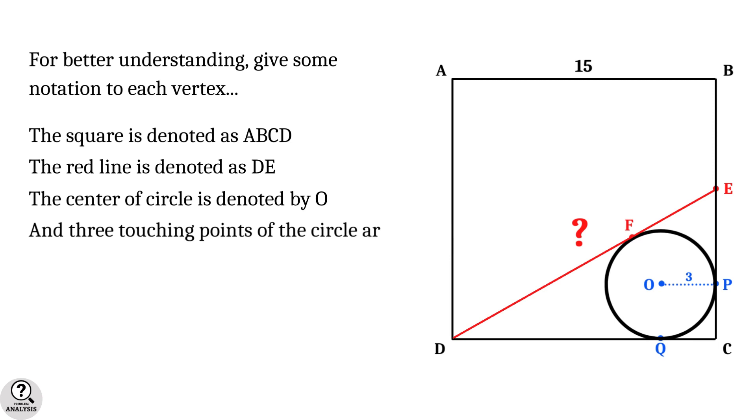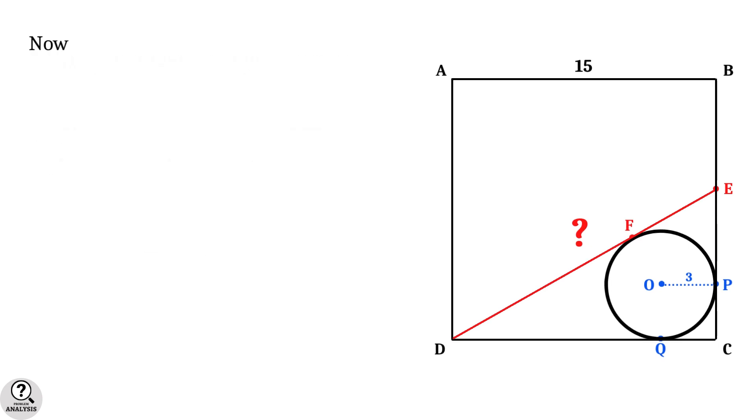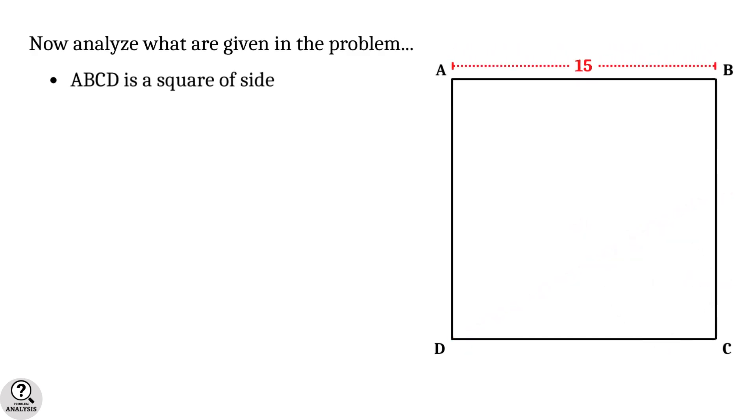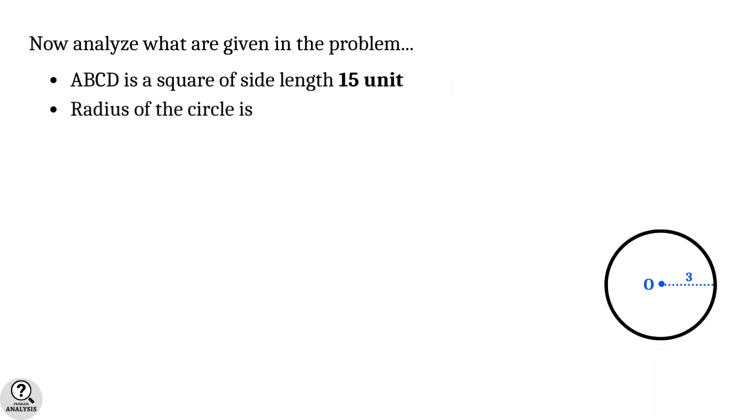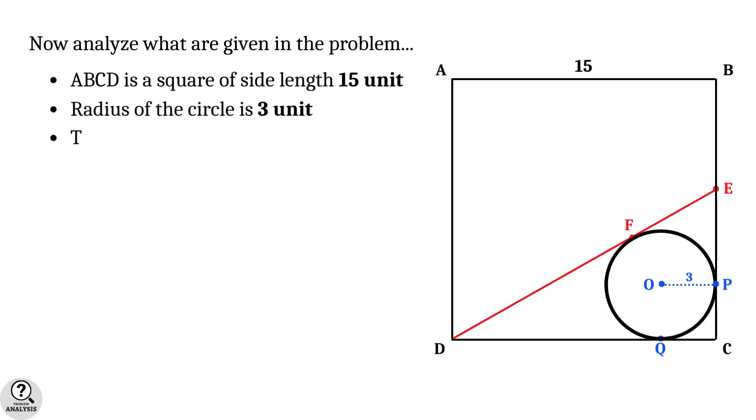Now we are going to analyze the problem. Firstly, ABCD is a square of 15 unit side length. Secondly, radius of the circle is three units.